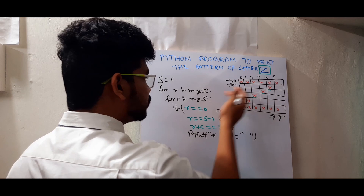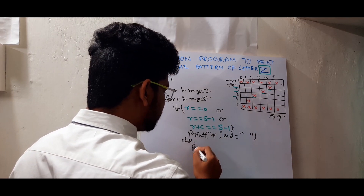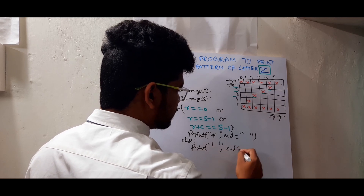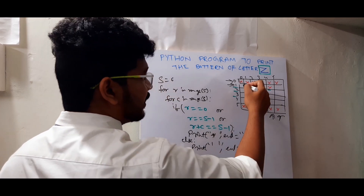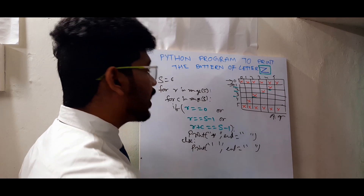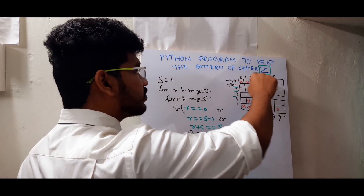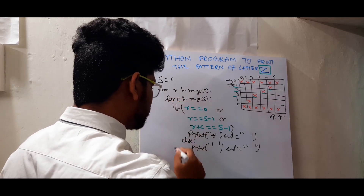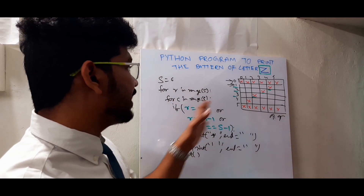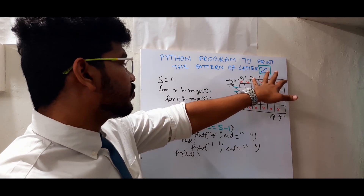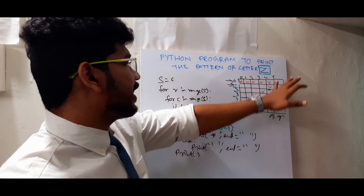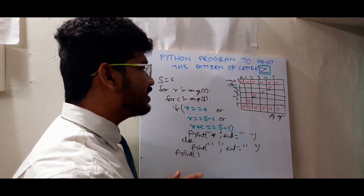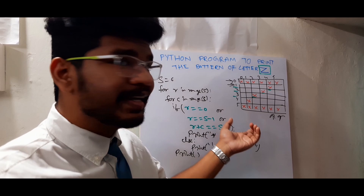I also need to print spaces in the else condition so that all the remaining empty gaps are filled with spaces. After each full row iteration, I also need to go to the next line, so I do an empty print after the inner for loop. Those are the basic conditions — first row, last row, and the slanting line where row plus column equals the size. These are the three conditions used to print the letter Z.